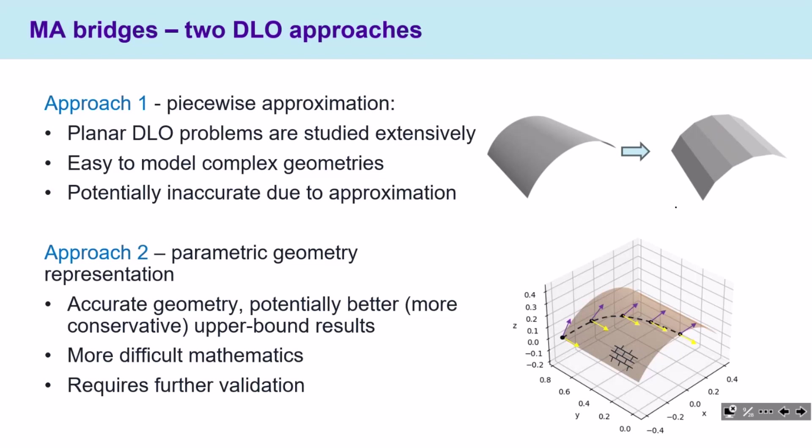We use these methods to solve masonry arch problems using two approaches. The first is a relatively simple approach where we discretize the domain and make a linear approximation. Since planar DLO problems have been studied extensively, we have confidence it will work, and you can model relatively complex geometries. The second approach uses parametric geometry representation, giving a smooth curved geometry and accurate geometric representation with potential for much better solutions than the approximated version.